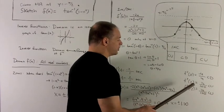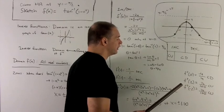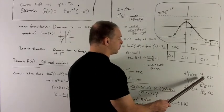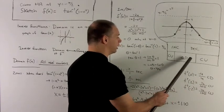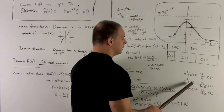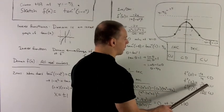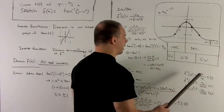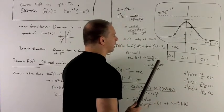I check a point in each region to determine concavity. f double prime of 0 gives me minus 4 over 4, so we're concave down here. f double prime of 2 is going to be 76 over 100, so we're positive there, concave up. And same for f double prime of minus 2, concave up here.